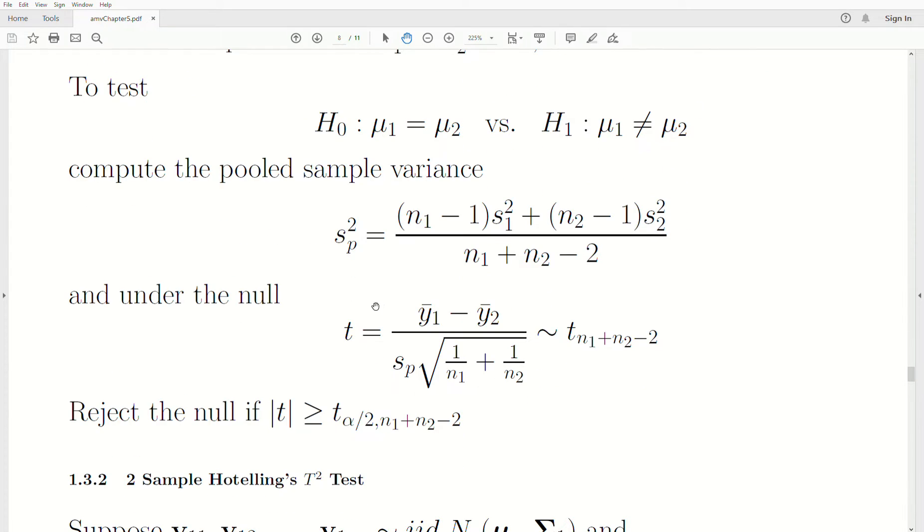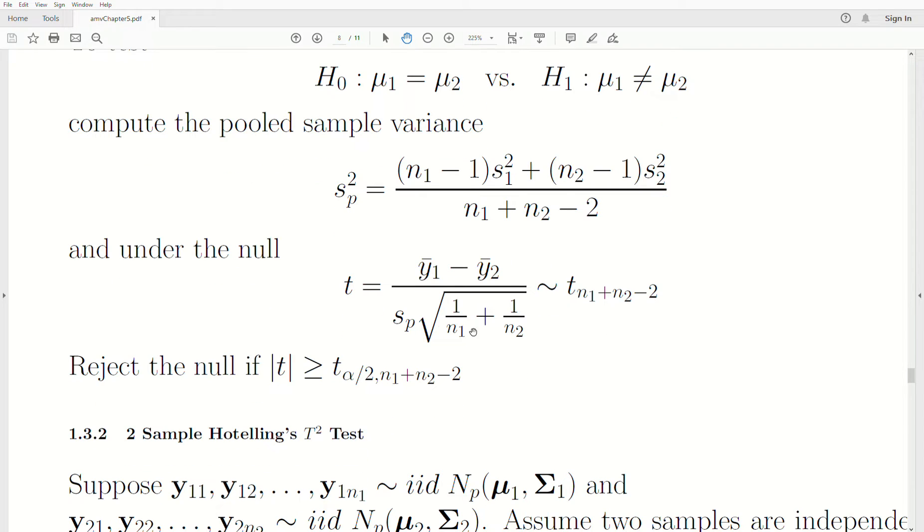Under the null hypothesis, this test statistic follows a t-distribution with N1 plus N2 minus 2 degrees of freedom. We reject if our test statistic is too big, either too negative or too positive. Since it's a two-tailed test, we divide α by two.